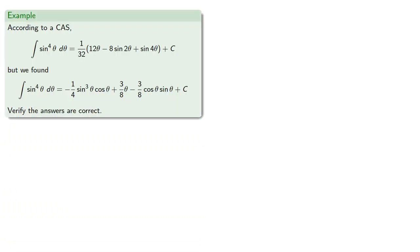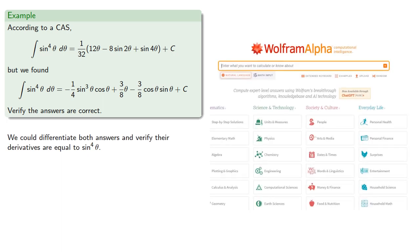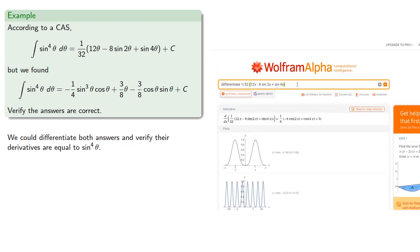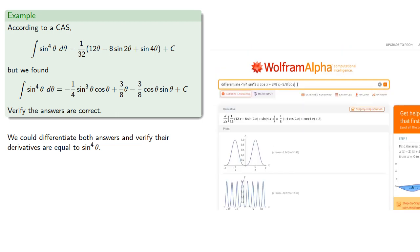So according to a computer algebra system, the integral of sine to the fourth is this, but we found this, and let's verify the answers are correct. So the obvious thing to try is we could differentiate both answers and verify that derivatives are equal to sine to the fourth. But this would require using a lot of trigonometric simplifications.